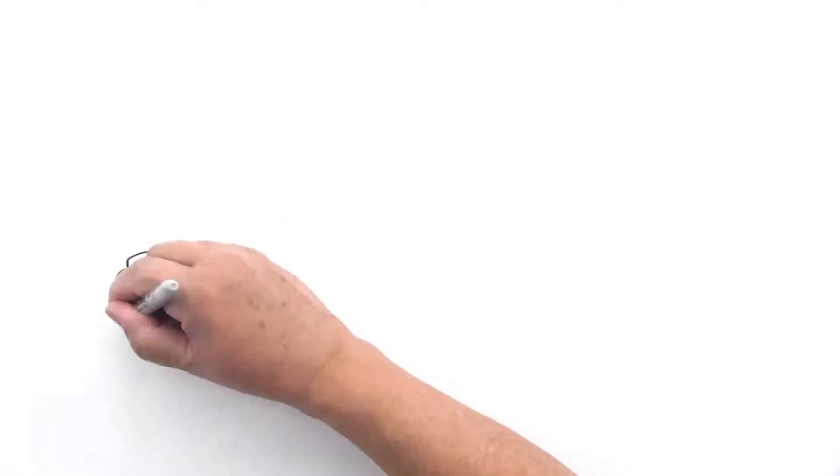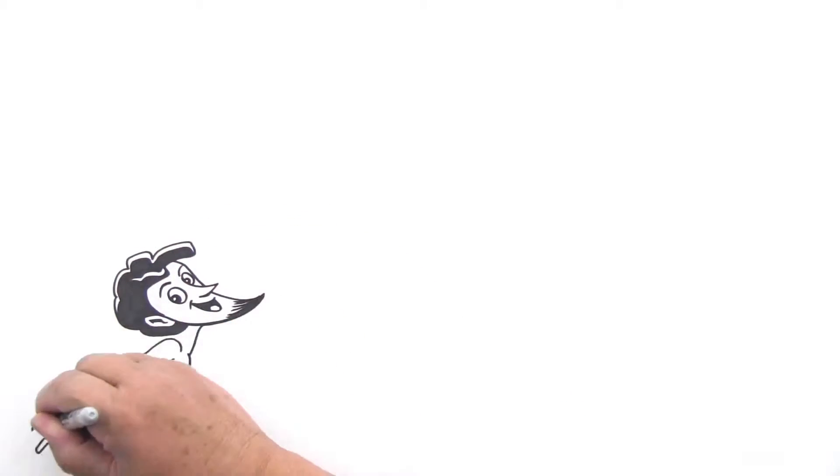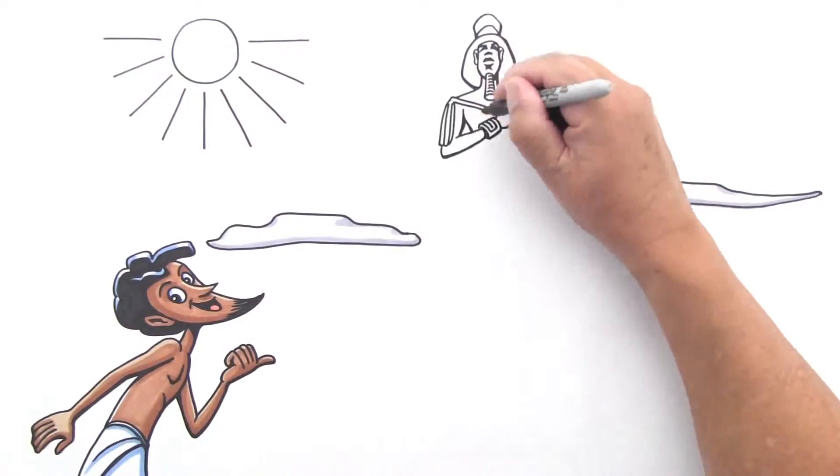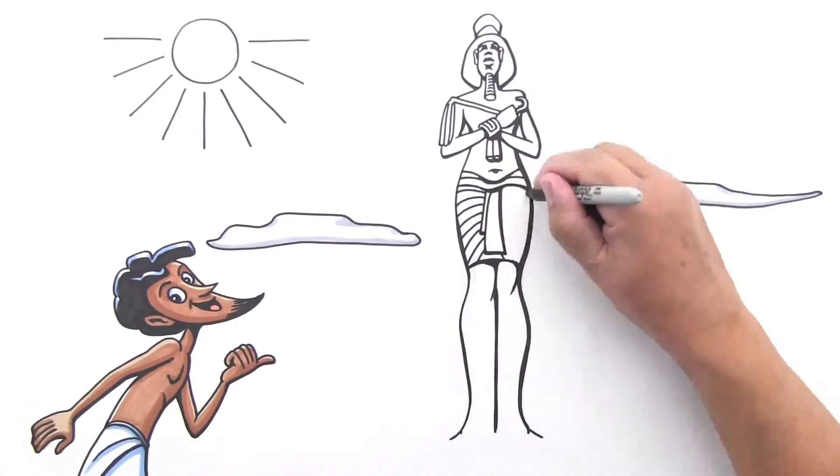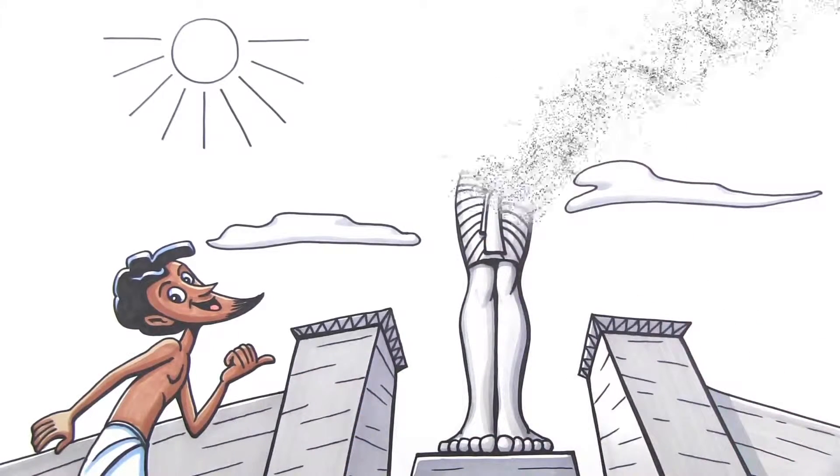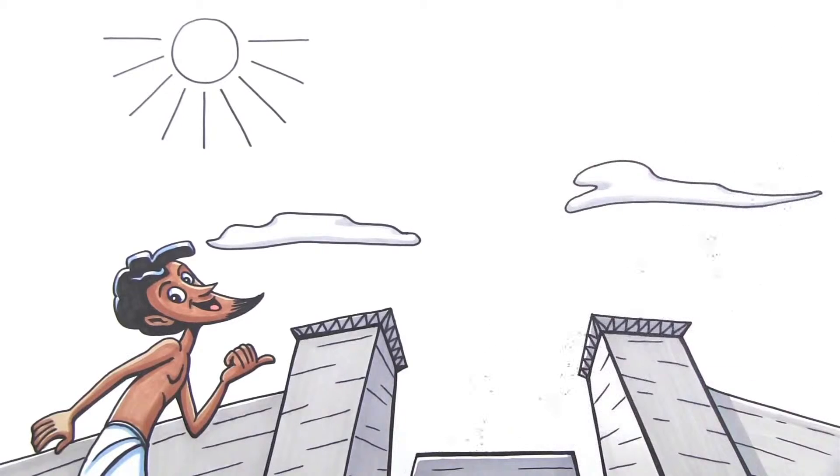Except for one brief moment called the Amarna period, when a pharaoh named Akhenaten ushered in a new style and a new religion. All of a sudden, faces got stretched, bodies got streamlined and lengthened, thin was in. But when Akhenaten passed away, Egypt quickly reverted back to the old familiar ways.